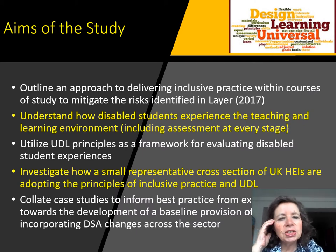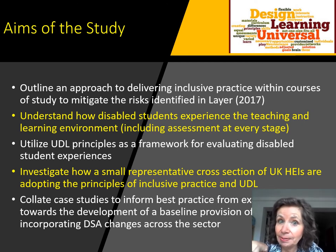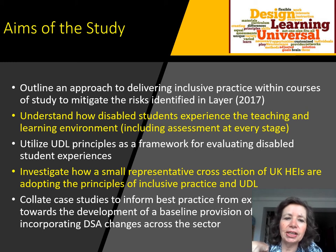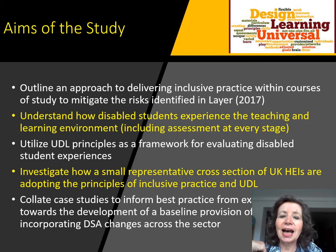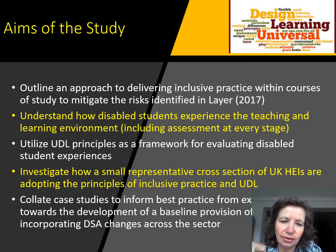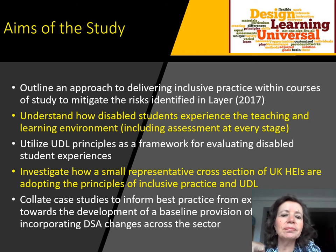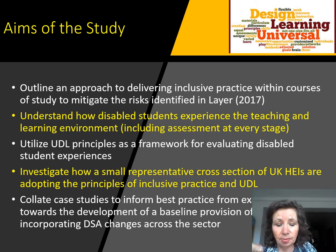The aims of this study were to outline an approach to delivering inclusive practice within courses to mitigate the risks identified by Layer, and to understand how disabled students experience the teaching and learning environment, including assessment at every stage of the journey from pre-entry to post-exit, including how they interact with every aspect of student services, professional services, admissions, et cetera. We looked at a small representative cross section of UK universities, and I subsequently replicated this with a small cross section of American universities — a paper on that is in press. We did a sort of case study approach effectively.